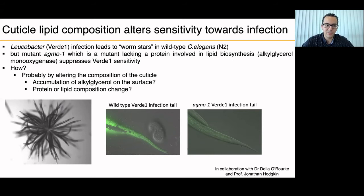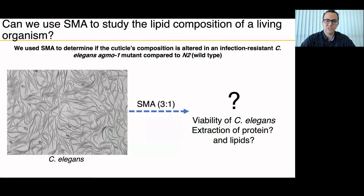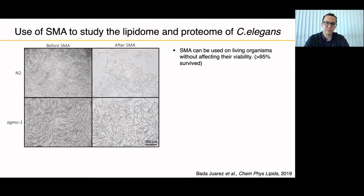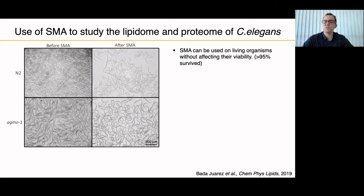How is this possible? Probably because the cuticle is different — but how is it different in terms of alkylglycerol composition, lipid composition, or protein-lipid changes? What we did was take C. elegans, add SMA 3:1, and check first whether they were still alive after SMA treatment, then whether we could extract proteins and lipids. We found viability was more than 95% of worms surviving after SMA treatment for up to 40 minutes at 37°C at 10% weight/volume.